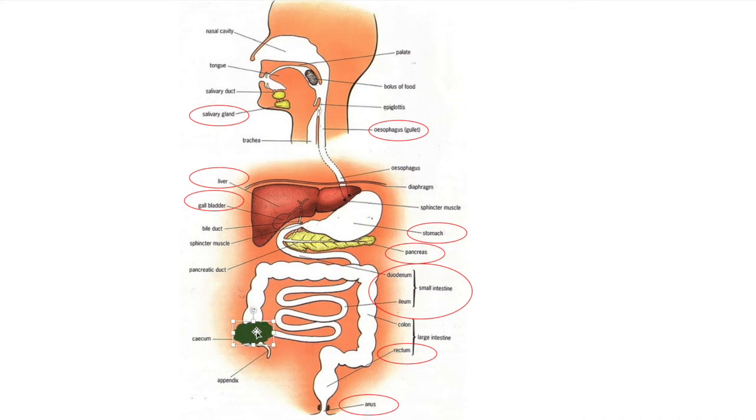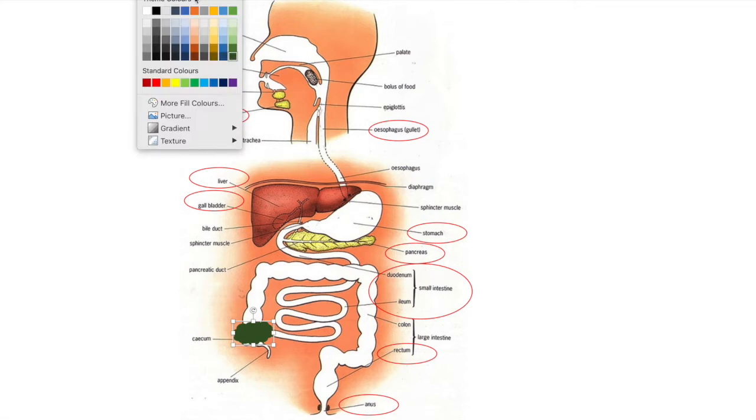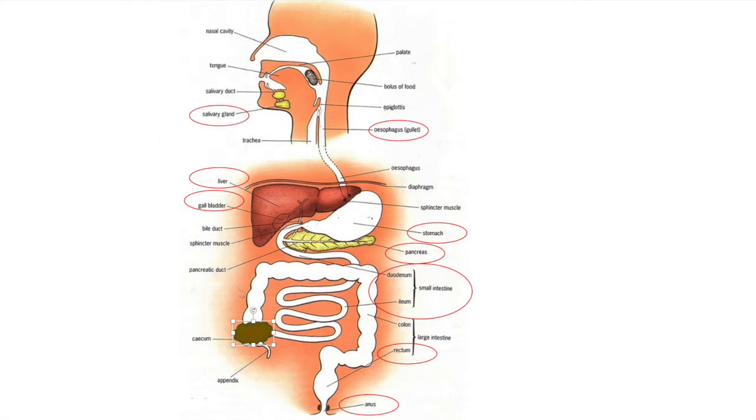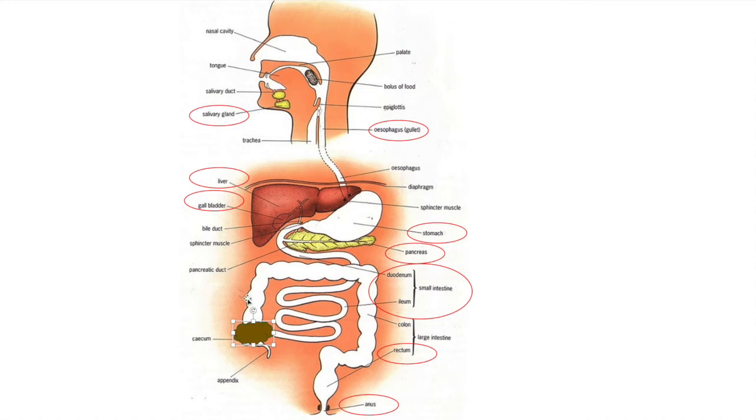It digests and absorbs all the way through the small intestine, then goes to the large intestine where mainly only water is absorbed and the remainder of the undigested food materials will be passed out. Let's take a deeper look at the process of digestion.